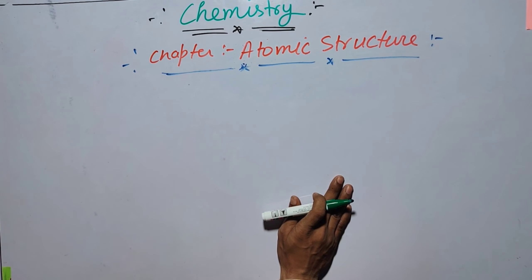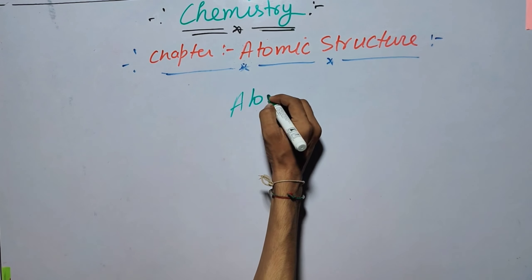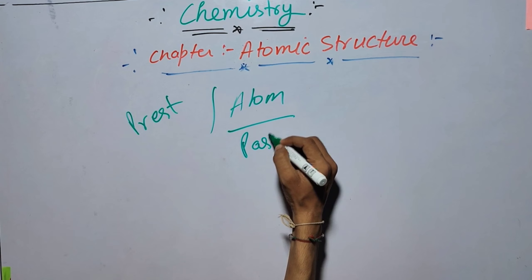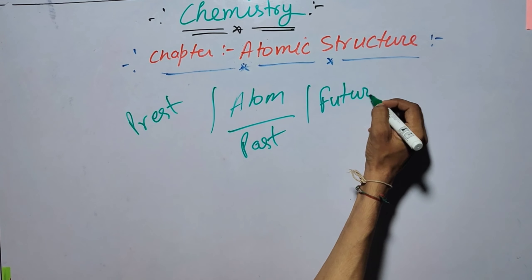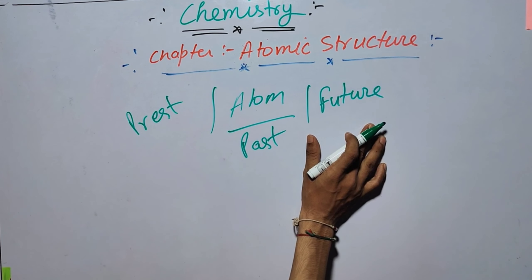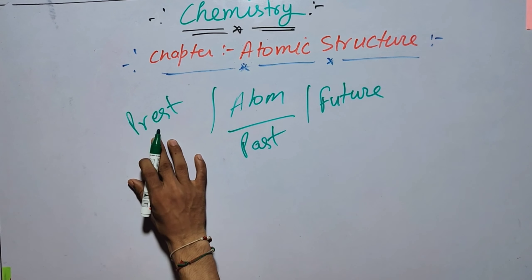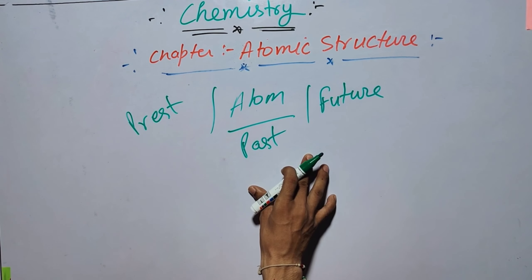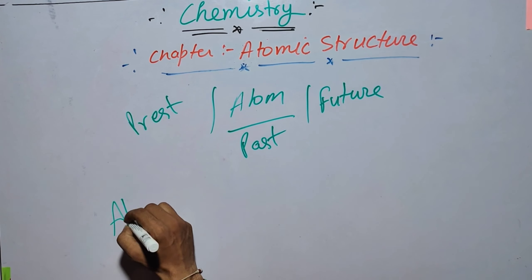Why are we starting with atomic structure? Here is the answer: atom - the present, past, and future of chemistry. Its present, its past, its future all are arising from atom.